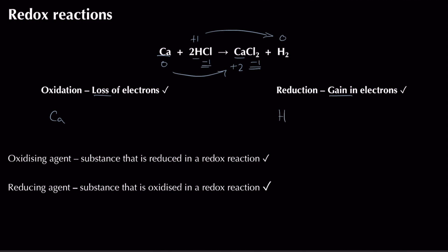You also need to be able to write half equations, which you'll cover in more detail in year two, but since you've already done this at GCSE: calcium is being oxidised, so we write an arrow showing calcium two plus being formed by losing two electrons. That's the half equation for oxidation.